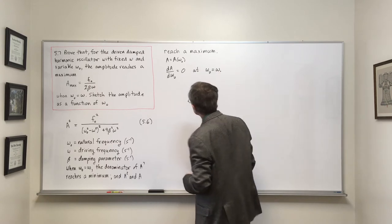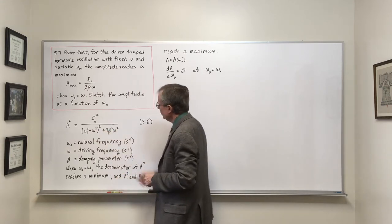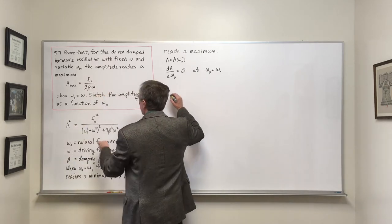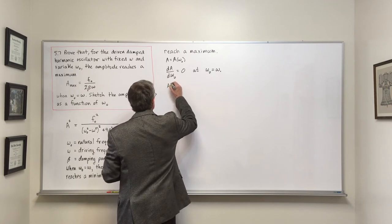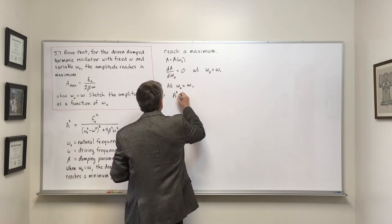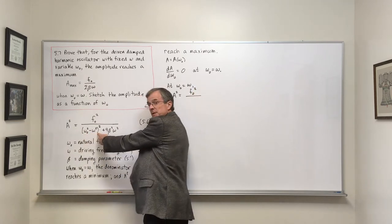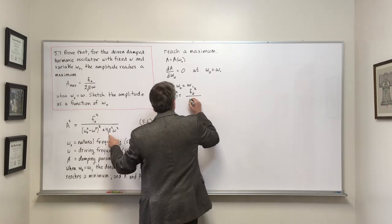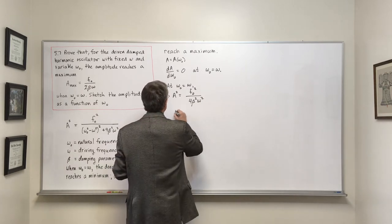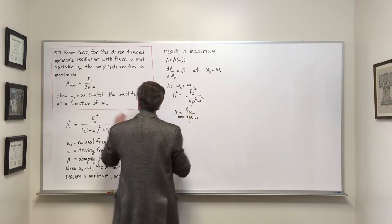Having proved that the amplitude reaches a maximum, we now find what that maximum is. When omega equals omega naught, A-squared equals f-naught squared over four beta squared omega squared, since the other term in the denominator vanishes. Taking the square root of both sides gives us A-max, which agrees with the equation given.